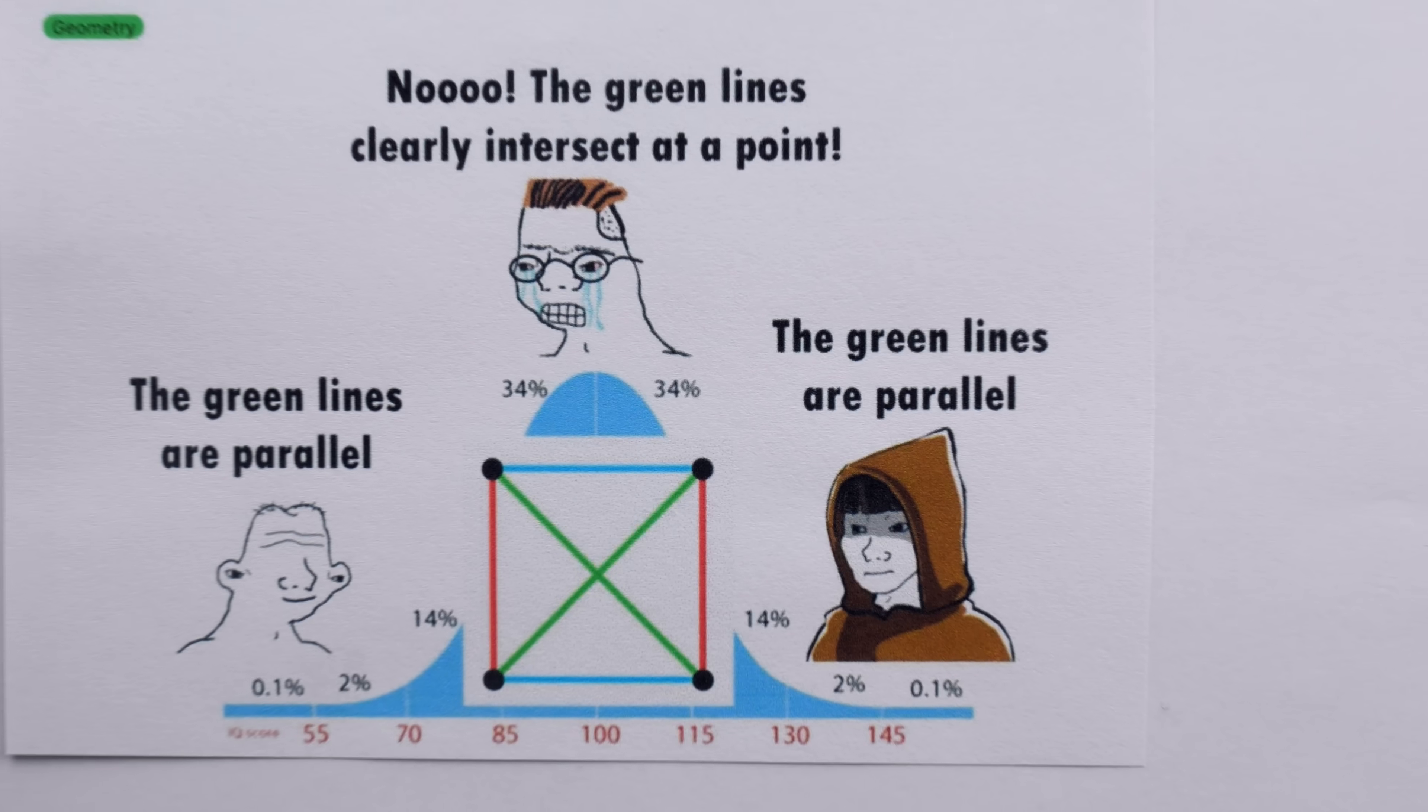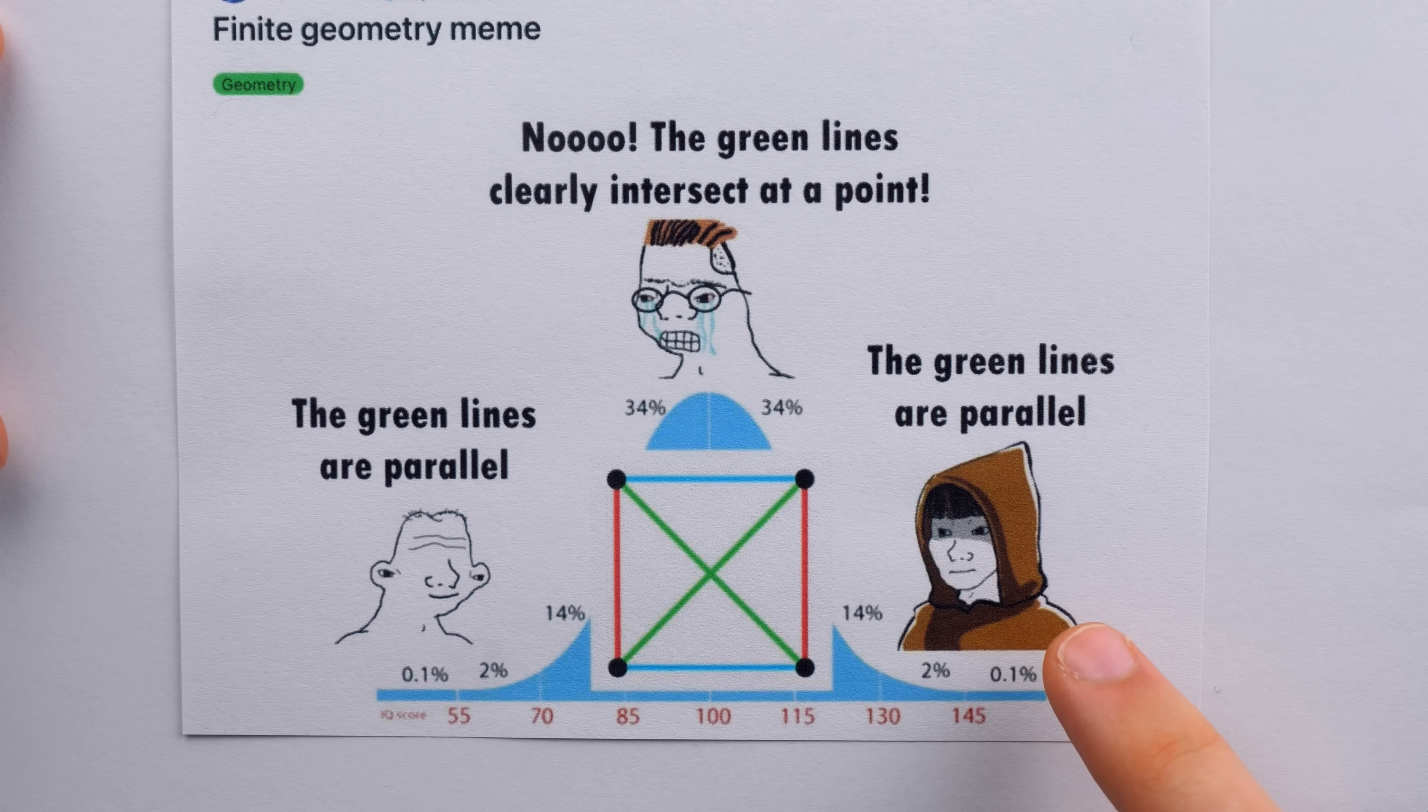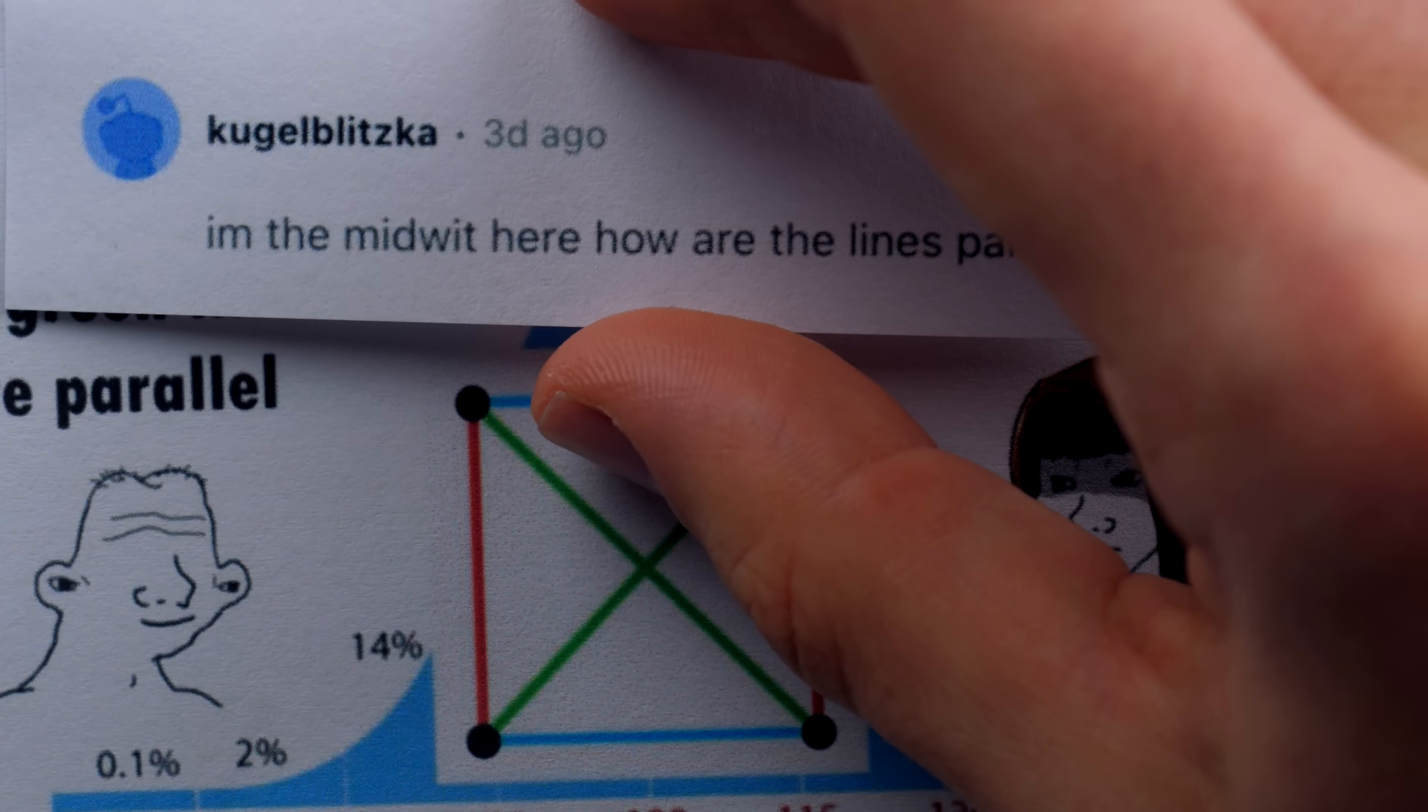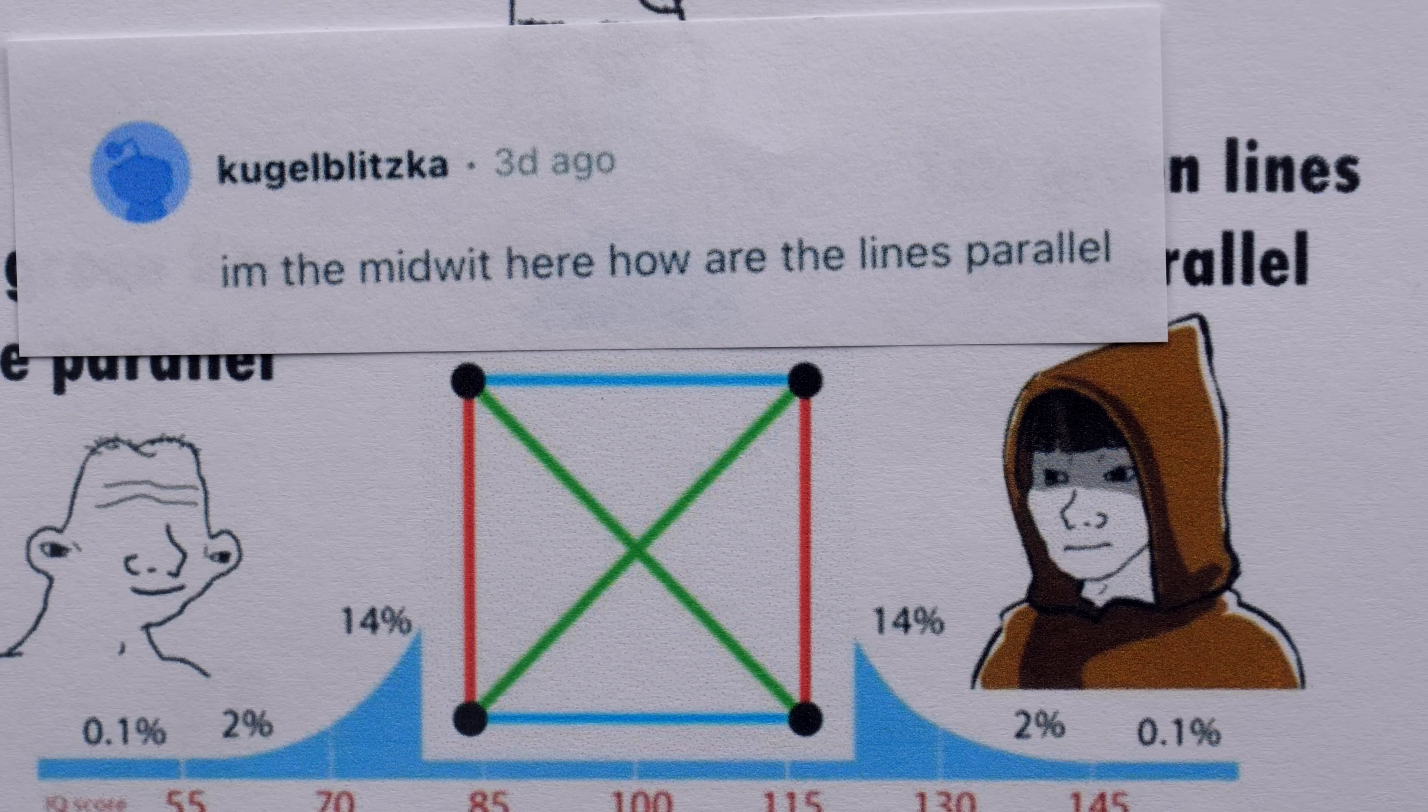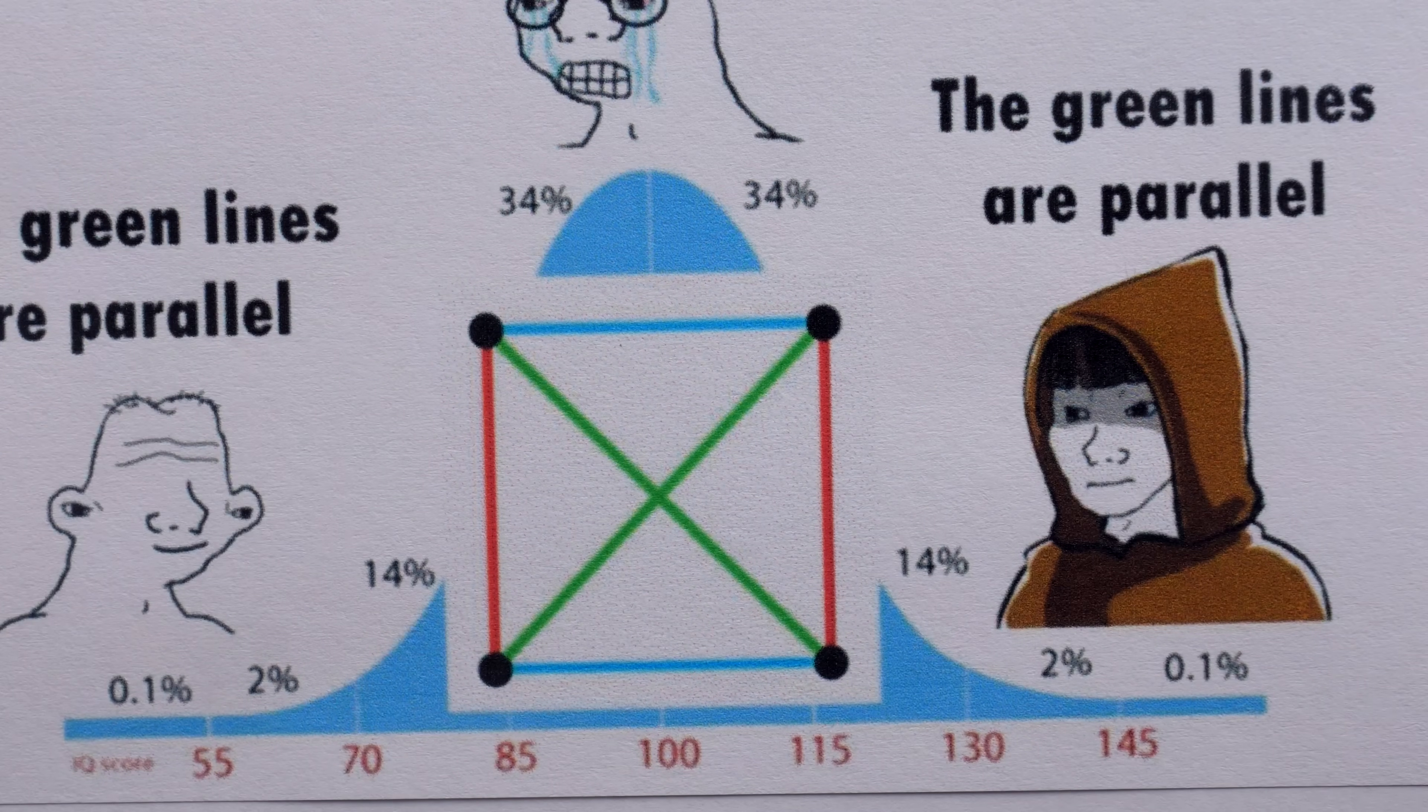But then, on the far end of the bell curve, those wise mathematical sorcerers who have lived, breathed, and smelled mathematics may say that indeed, the green lines are parallel. Kugel Blitzka replied to this meme saying, I'm the midwit here, how are the lines parallel? Well, today, I'm going to tell you a little bit of finite geometry so you can understand why these lines are parallel, and will even do a proof.